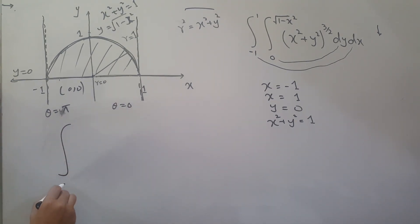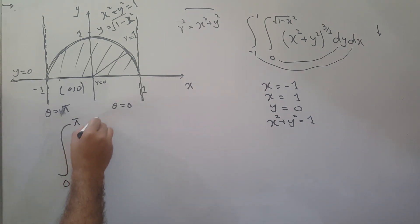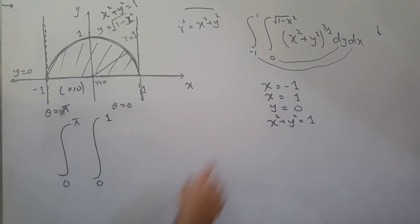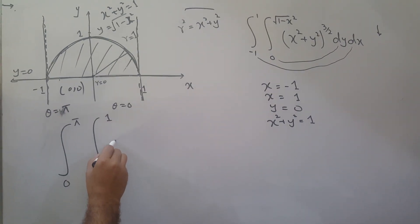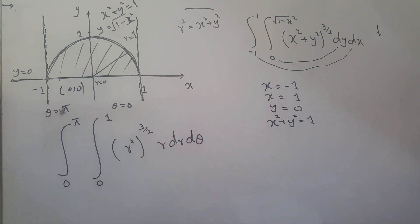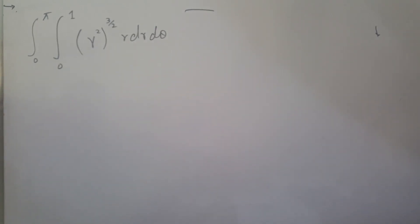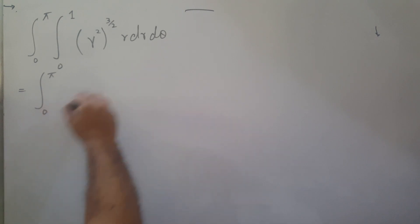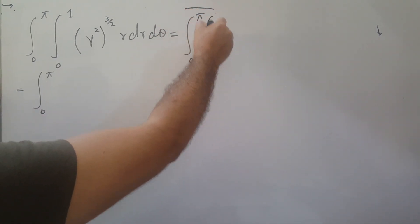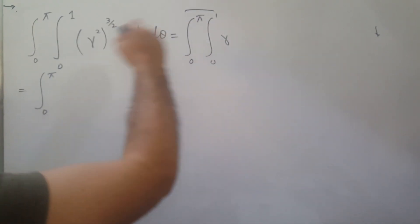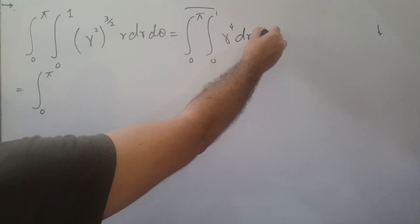So theta goes from 0 to pi, and r goes from 0 to 1. The integrand x squared plus y squared becomes r squared, and dy dx transforms into r dr d theta. We now simplify: r squared times r from the Jacobian gives r cubed, and multiplying gives r to the fourth power, so the integral becomes the integral from 0 to pi, from 0 to 1 of r⁴ dr d theta.